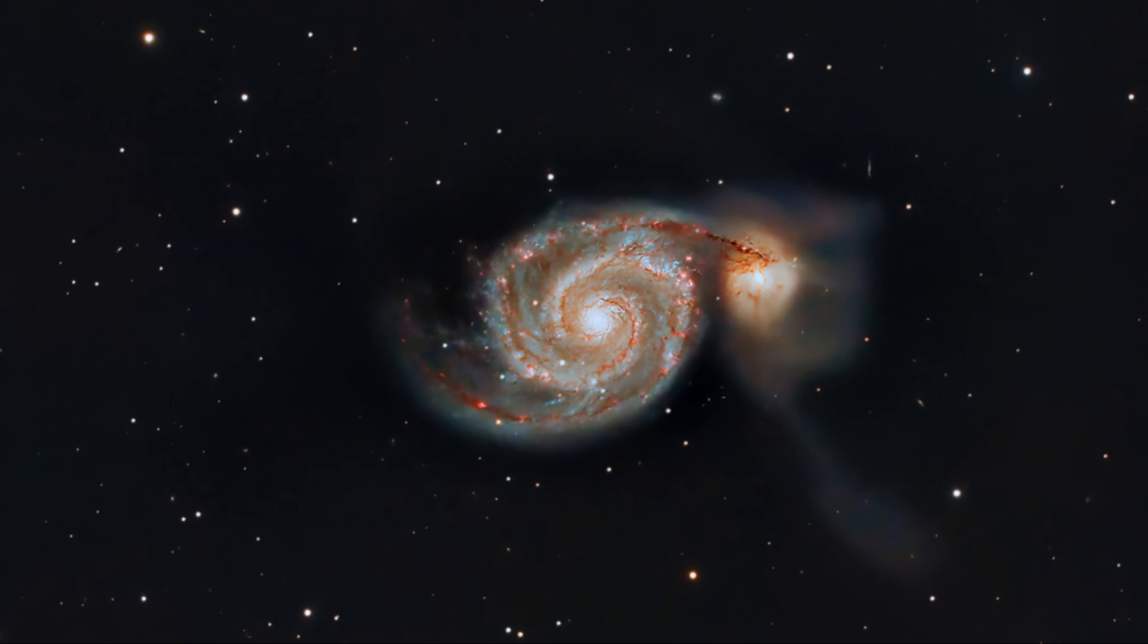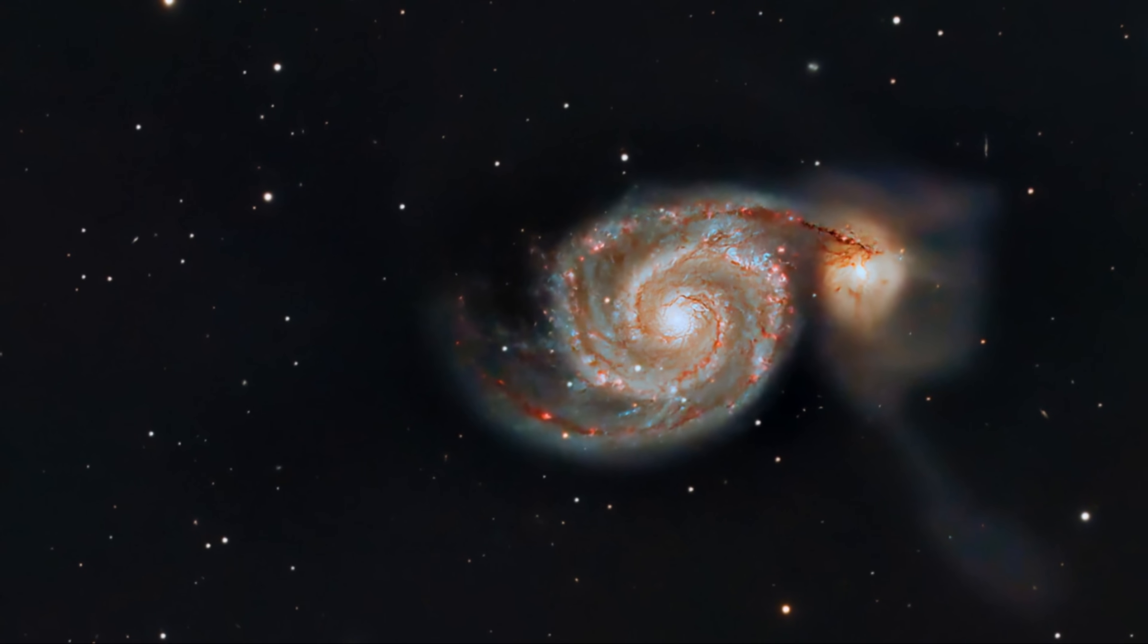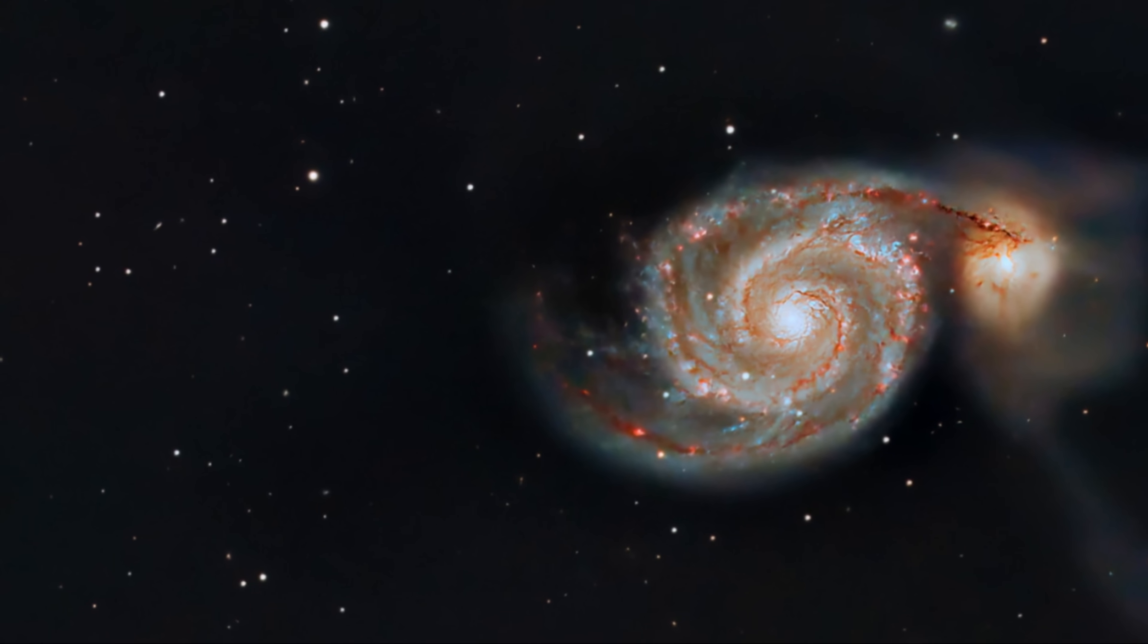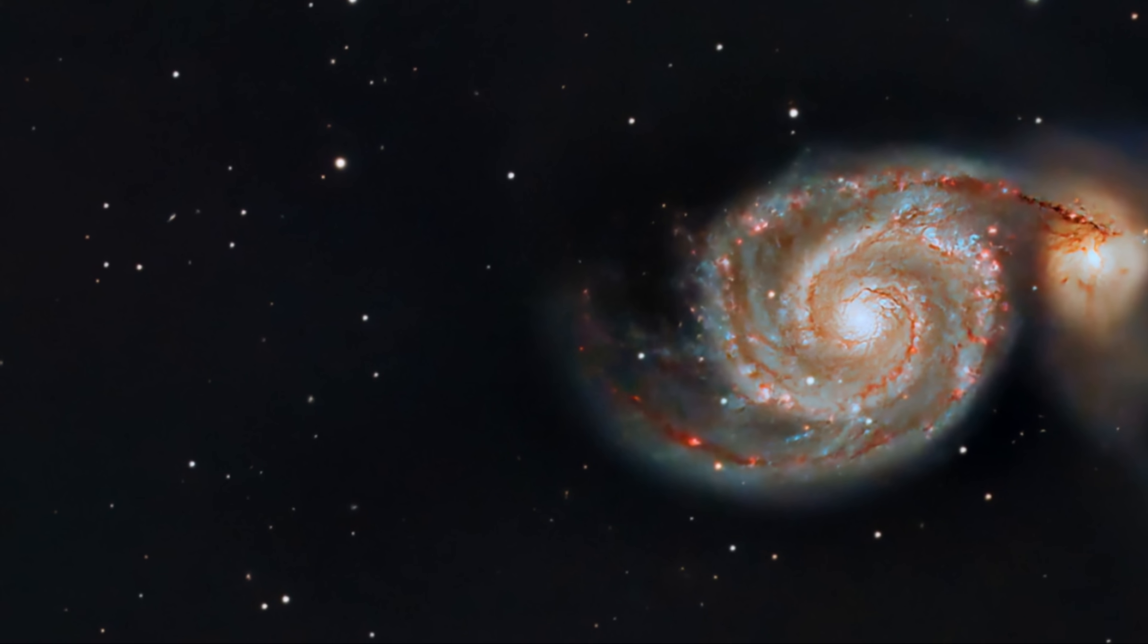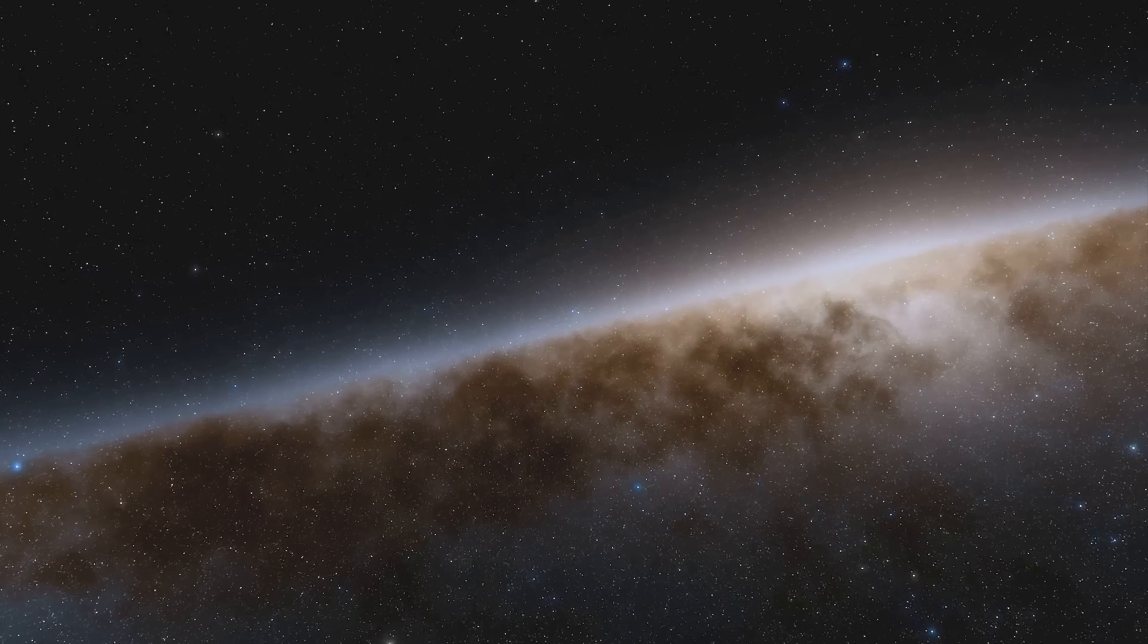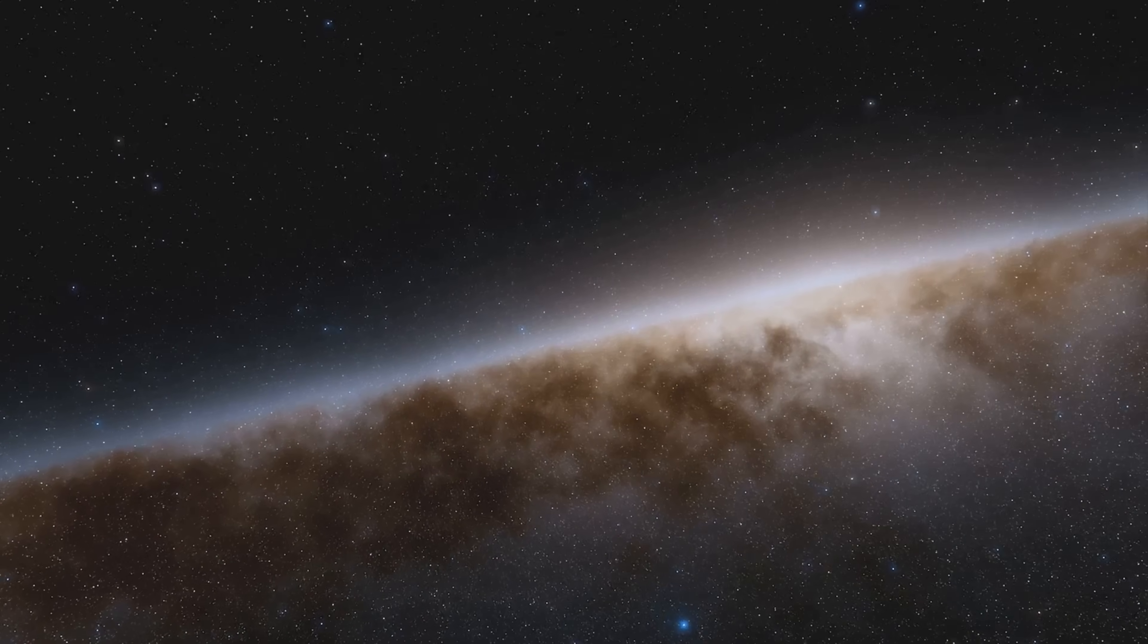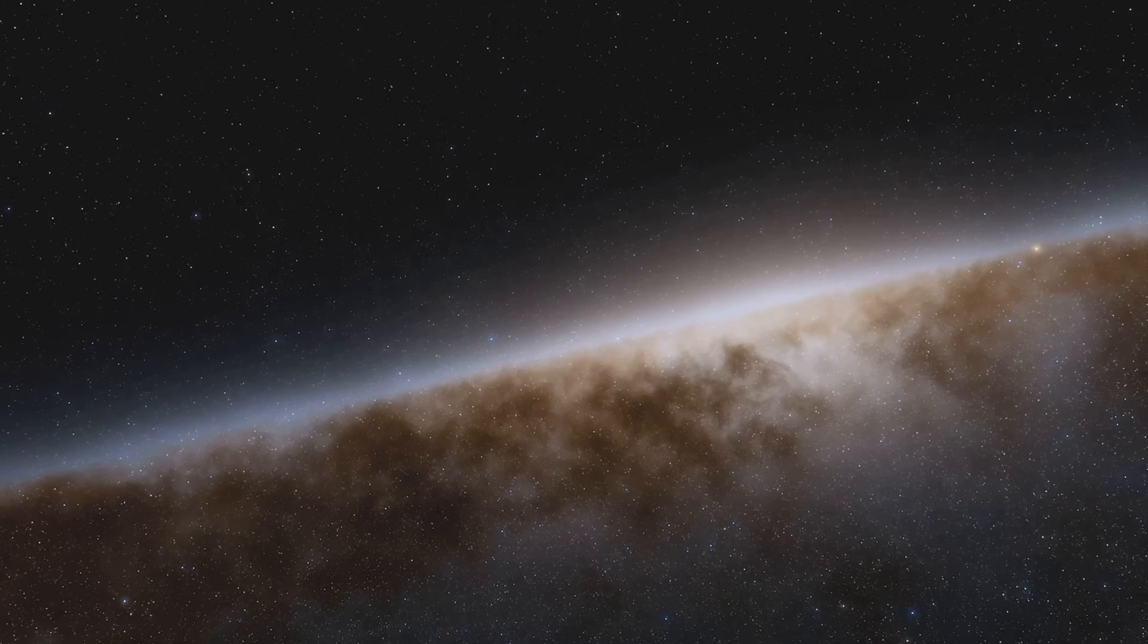The Milky Way is a barred spiral galaxy with a central bar and four spiral arms. These spiral arms are regions of active star formation where new stars are born from clouds of gas and dust. The central bar is a dense region of stars and interstellar material, and it plays a key role in the dynamics of the galaxy. It is estimated to contain hundreds of billions of stars. Each of these stars could potentially have its own planetary system, making the Milky Way a vast and diverse place. The sheer number of stars and the potential for countless planets make our galaxy a fascinating subject of study for astronomers.